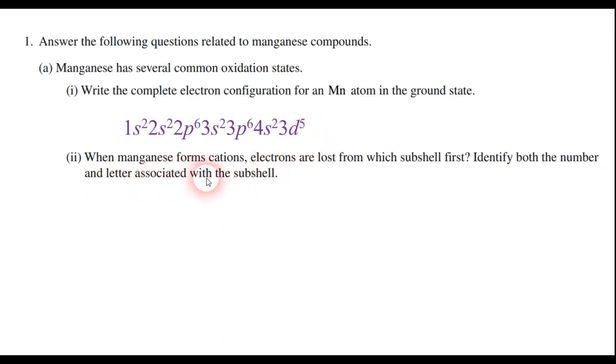On number 2, it says when manganese forms cations, electrons are lost from which subshell first? Well, normally we lose the valence electrons, so that implies that we're going to lose from the 4s subshell. Those are the ones that will be lost first. I don't believe you need to have an explanation there. So one point for each of those, one point for part 1, one point for part 2.